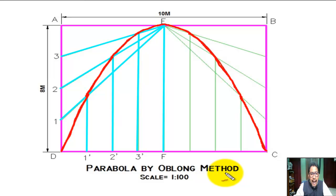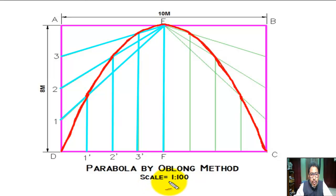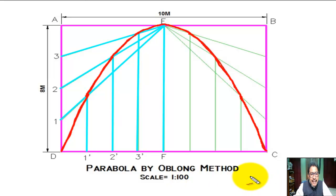We repeat the same thing for the right part of the parabola. Join all the intersection points by a smooth curve — this is the right half of the parabola. In the figure below, we write 'Parabola by Oblong Method' and we must write the scale equal to 1 is to 100. Thank you, students.